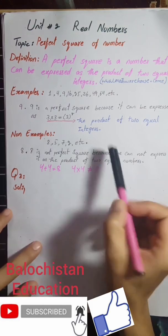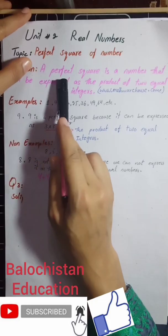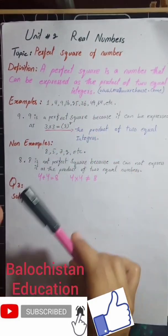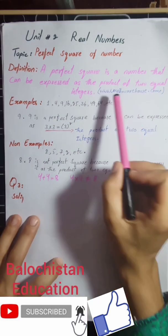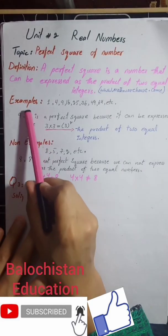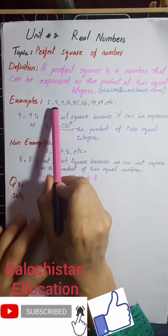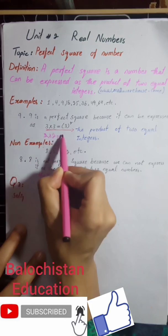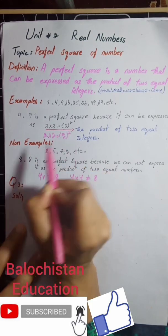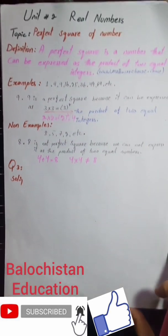I hope you now understand what perfect squares are. Perfect squares are numbers that can be expressed as a product of two equal integers. For example, nine can be expressed as three multiplied by three. If I want to find four, I can express it as two multiplied by two, which is the square of two, equal to four. Such numbers are known as perfect squares.